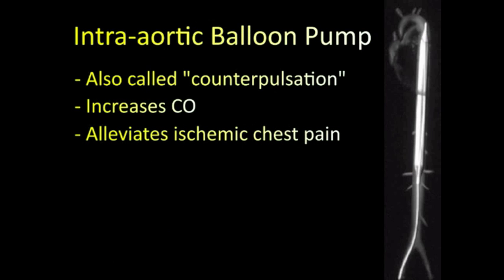Intra-aortic balloon pump therapy is often referred to as counterpulsation, which is appropriately termed because the balloon inflates during diastole when the heart is relaxing, and deflates during systole when the heart is contracting. IABP counterpulsation increases cardiac output. If a patient is having angina, they'll often have some alleviation of chest pain or other anginal equivalents, and the signs and symptoms of cardiogenic shock also improve.